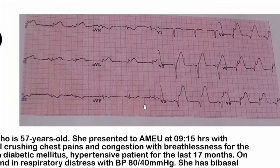When reading the ECG, start with the demographics — patient name, age, where and when it was taken. Then look at the rhythm. Examine the RR intervals — you can grab a piece of paper and mark the RR intervals against the screen, moving it along for at least three consecutive RR intervals. The rate appears regular because the RR intervals are equal when measured, even though the ECG may not look normal.